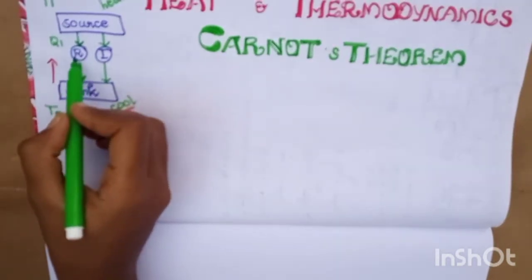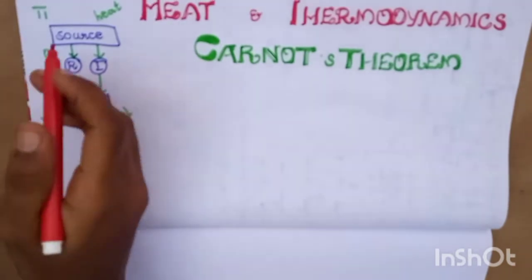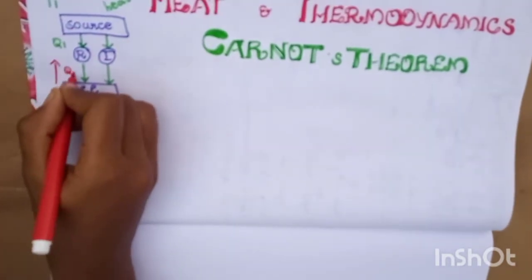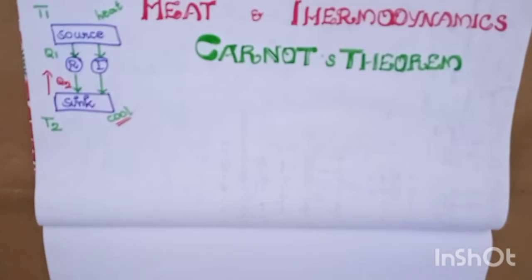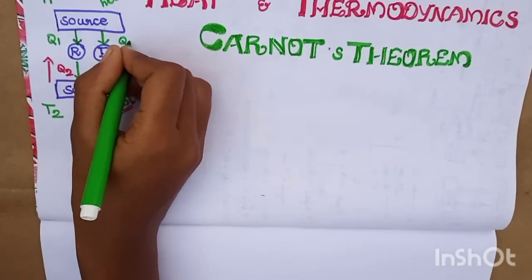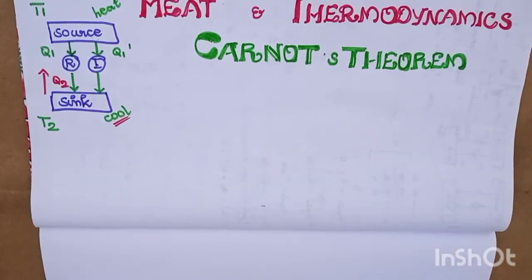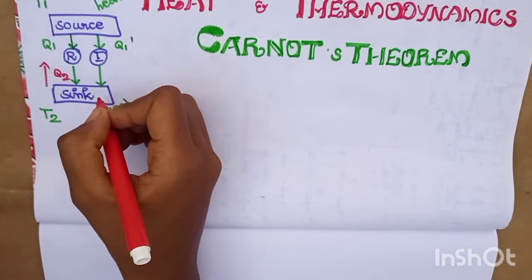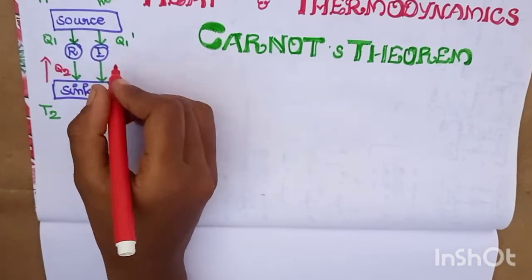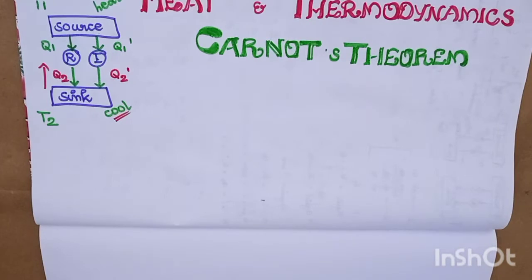In the diagram: source, reversible engine, Q1. The reversible engine rejects heat Q2 to the sink. Q1 is the heat absorbed, Q2 is the heat rejected.